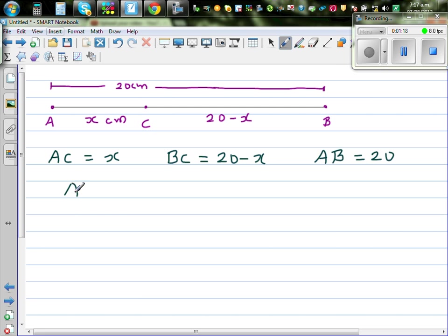AB or AC plus BC. AC plus BC. A to C plus B to C is equal to AB. Ok. So let's substitute. Let's check whether what we have written is right. So AC is what? X. X plus, what is BC? BC is 20 minus X. And this is equal to AB, which is we know is 20.